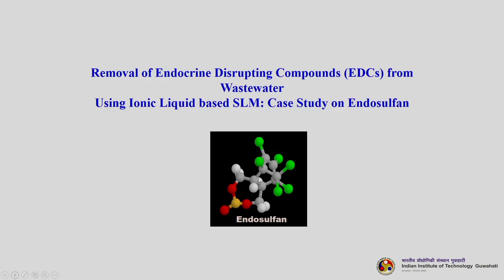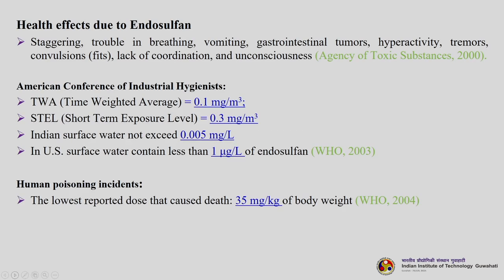I will show one case study carried out by my PhD student Dr. Santhi Rajupilli, who removed endosulfan — an endocrine disrupting chemical — from wastewater using an ionic liquid based supported liquid membrane. Endosulfan is highly toxic, causing staggering, trouble in breathing, vomiting, gastrointestinal tumours, hyperactivity, tremors, convulsions, lack of coordination, and unconsciousness on continuous exposure. The lowest reported dose causing death is 35 mg per kg of body weight. We used ionic liquids as the membrane phase — ionic liquids are salts made up of one cationic and one anionic group; you choose a particular cation and anion and fuse them to get an ionic liquid. Room temperature ionic liquids (RTILs) are liquid at room temperature.